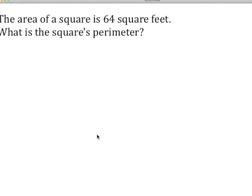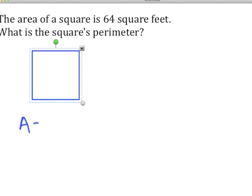In order to find perimeter we need to know side lengths. Let's draw a picture. We have a square and we know that the area is 64 square feet. How do we find area of a square? Remember, area of a square is one side length raised to the second power.